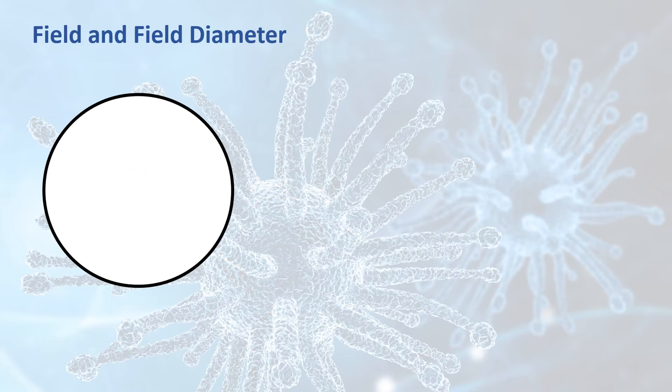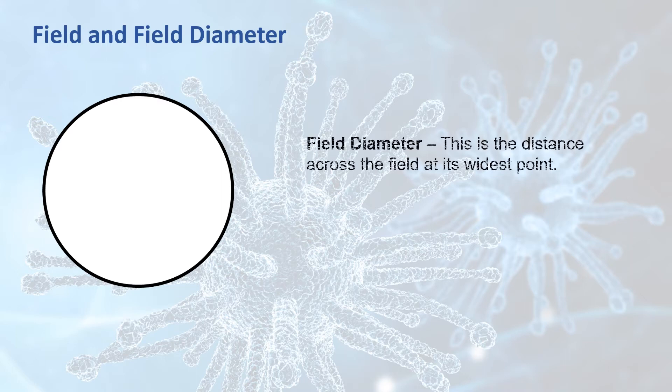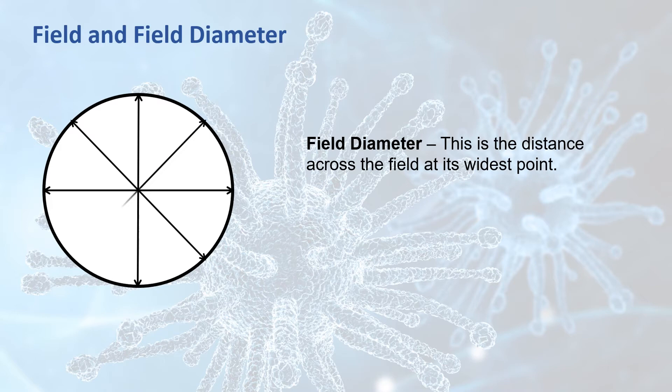Since the field is a circle, the field diameter is just the distance across the field at its widest point. Just imagine a straight line running right through the center point of the field from one side to the other. And since the field is a circle, the orientation of the line doesn't matter. As long as the line passes through the center of the circle, the length of the field diameter will be the same.